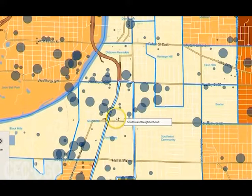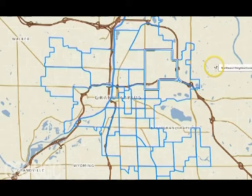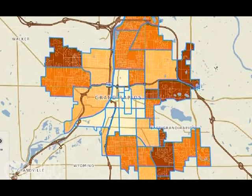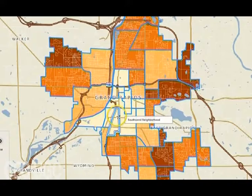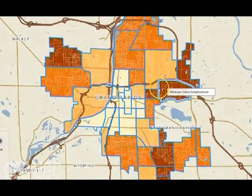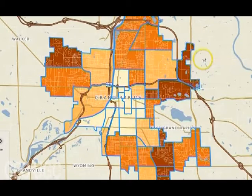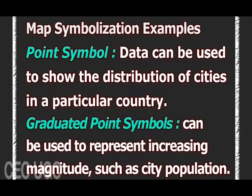Area symbols take the form of shading, coloring, cross-hatching, and dot patterns, and represent features such as uniform regions. They identify areas with common traits — entities such as counties, states, etc.